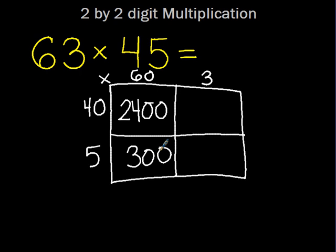Excellent. What do I do next? You do 3 times 40. 3 times 4 is 12, then it has to be 120.